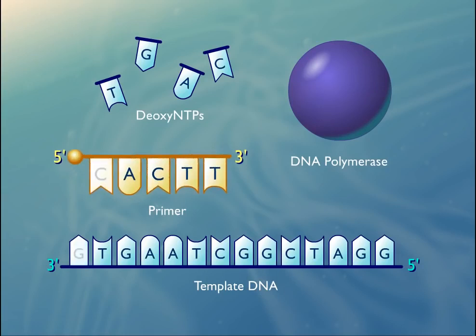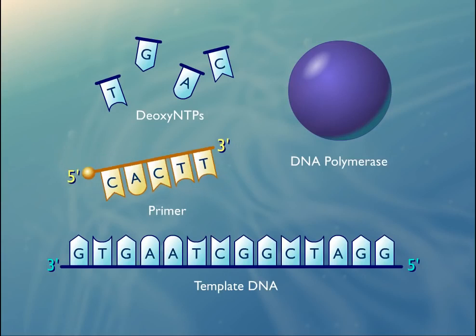The primer has a nucleotide sequence that is complementary to the three-prime end of the region to be copied, and is required so that DNA polymerase can initiate DNA replication.